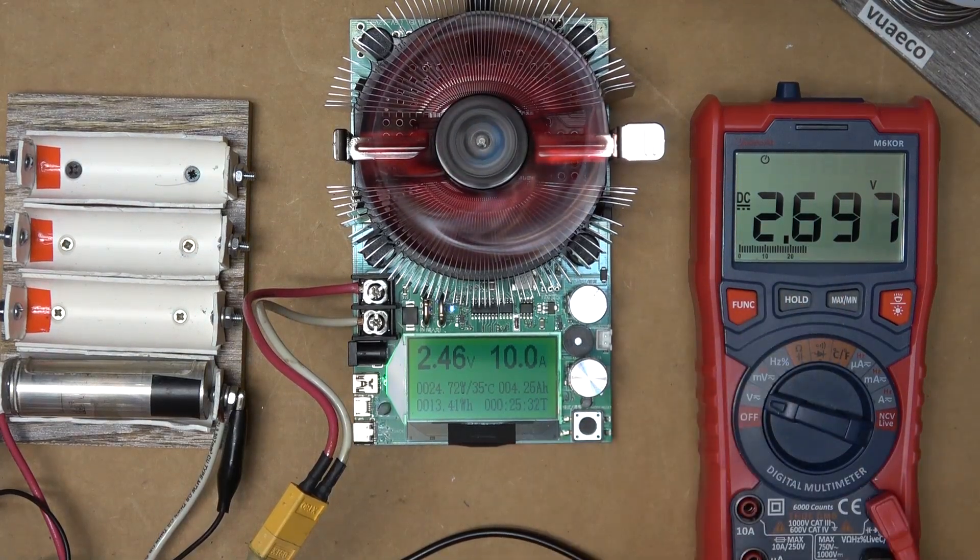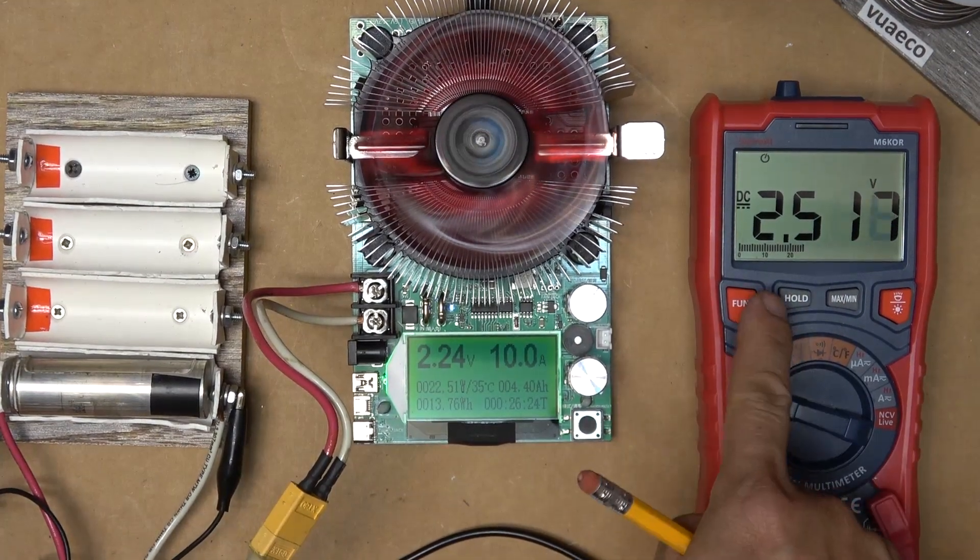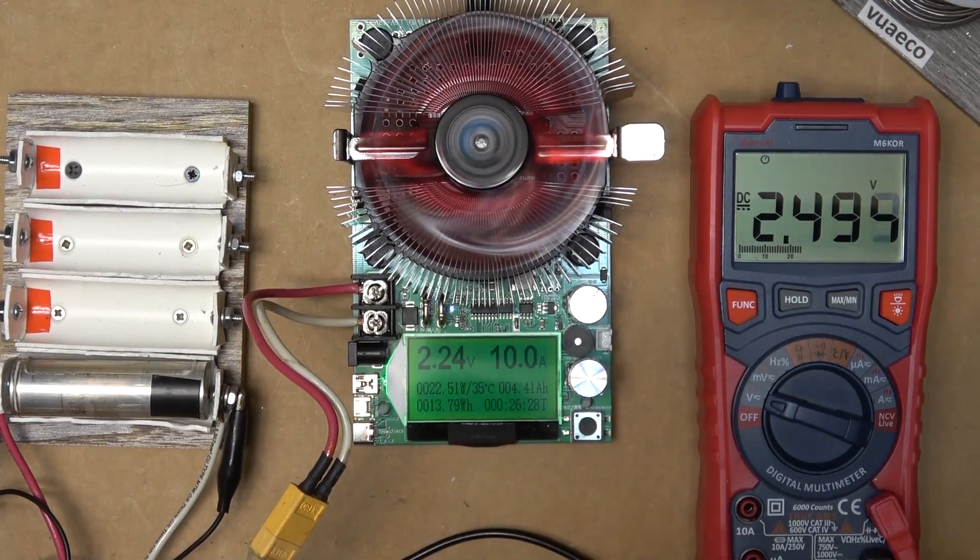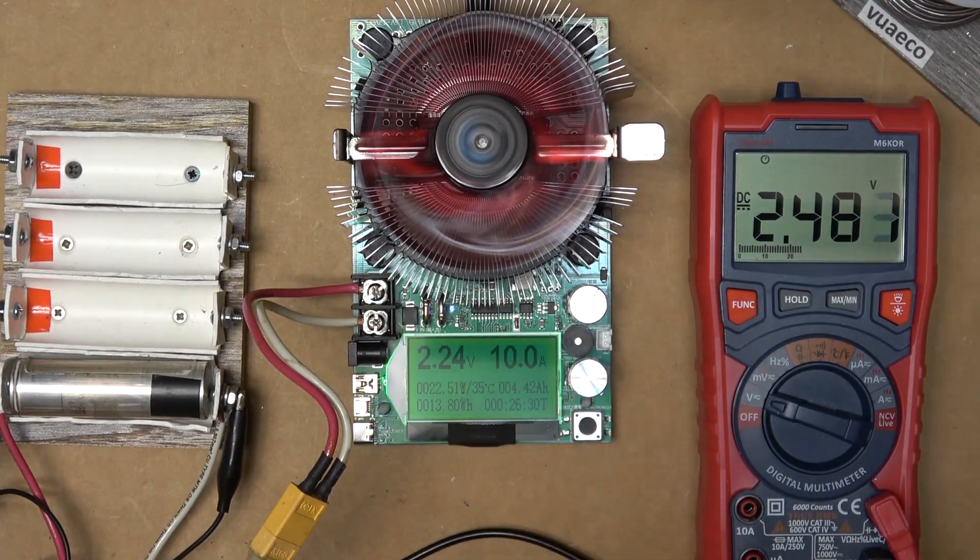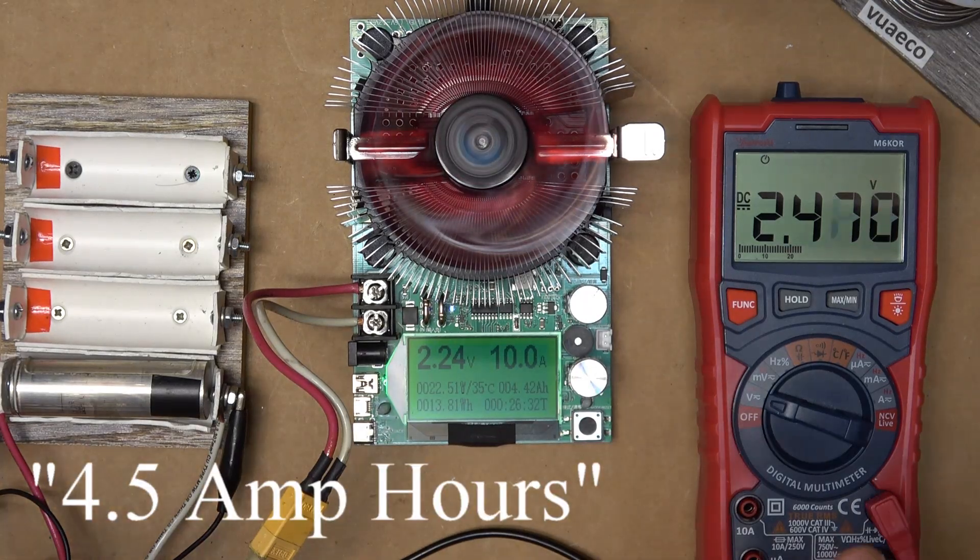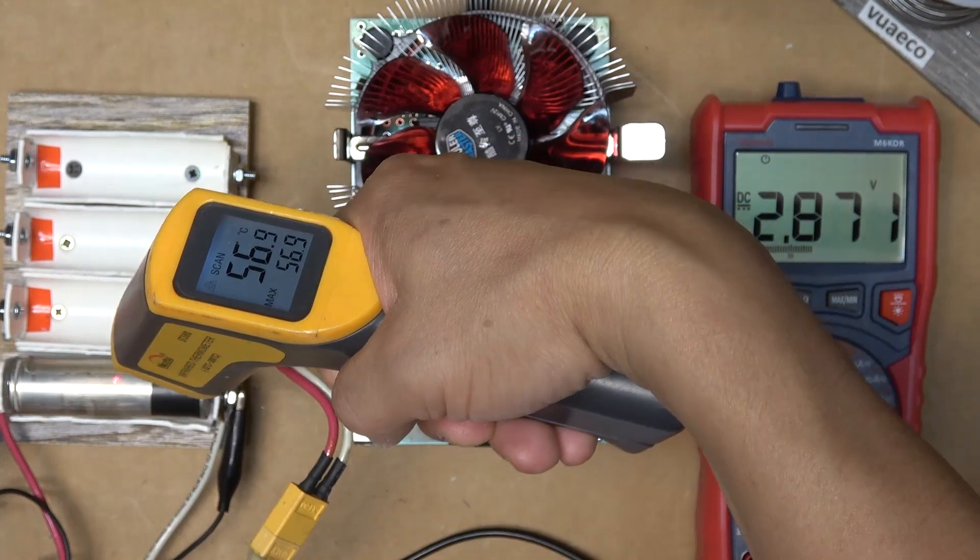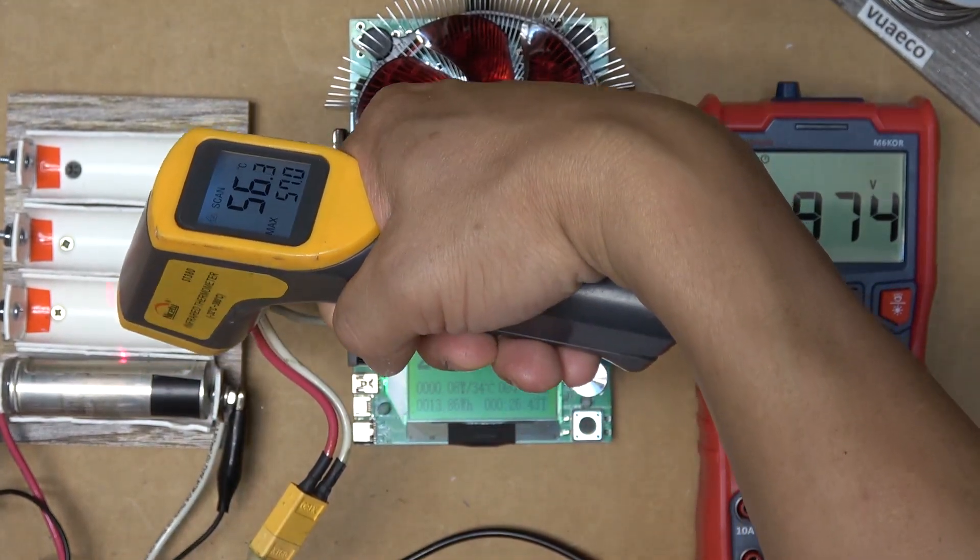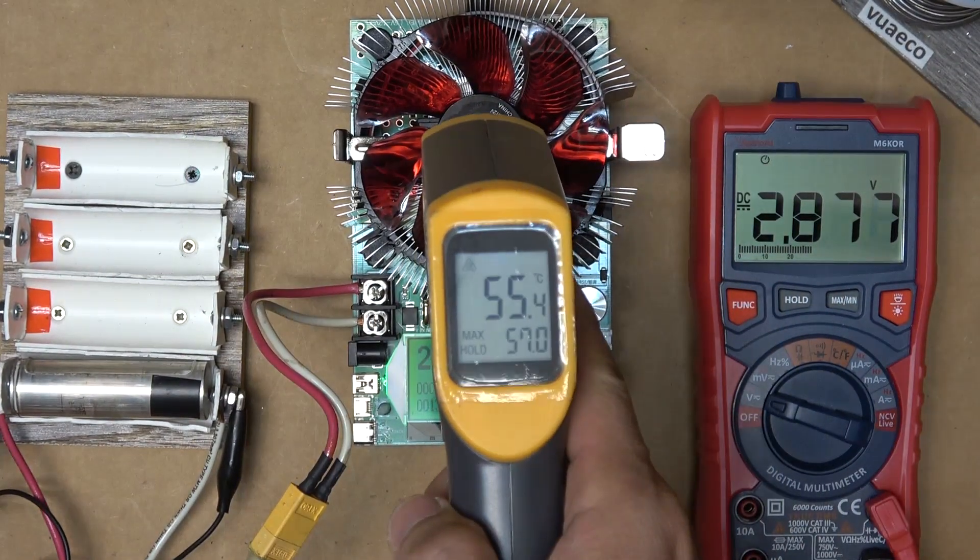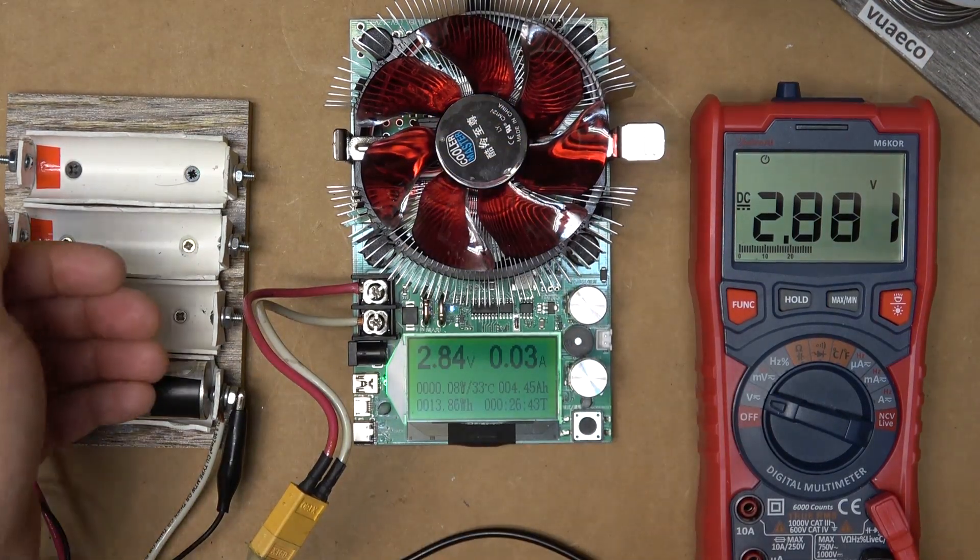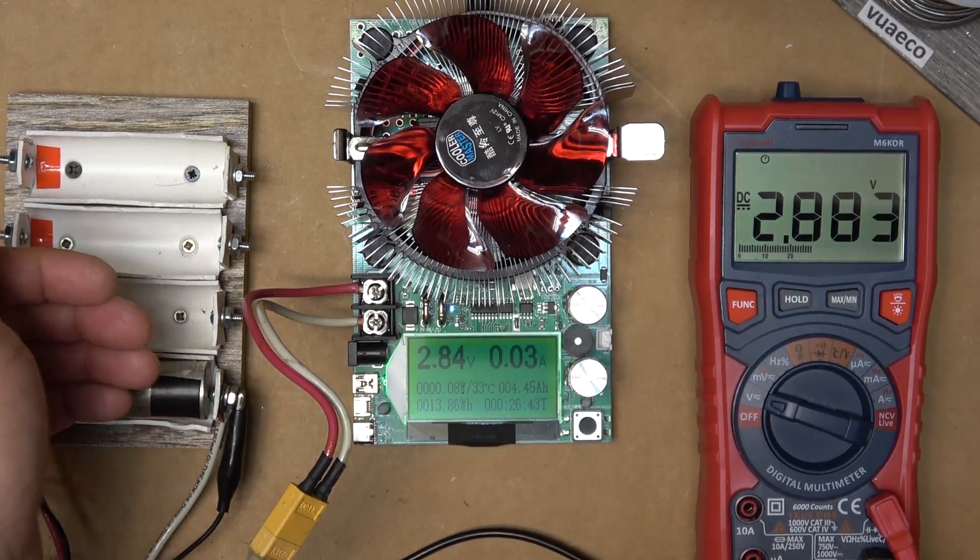Two and a half volts right now. We're at about 26 and a half minutes. And capacity is almost four and a half hour. And I think it's time to stop right here. And let's check on the temperature of the battery. 57 degrees Celsius. That is hot. Now I can't touch it for too long.